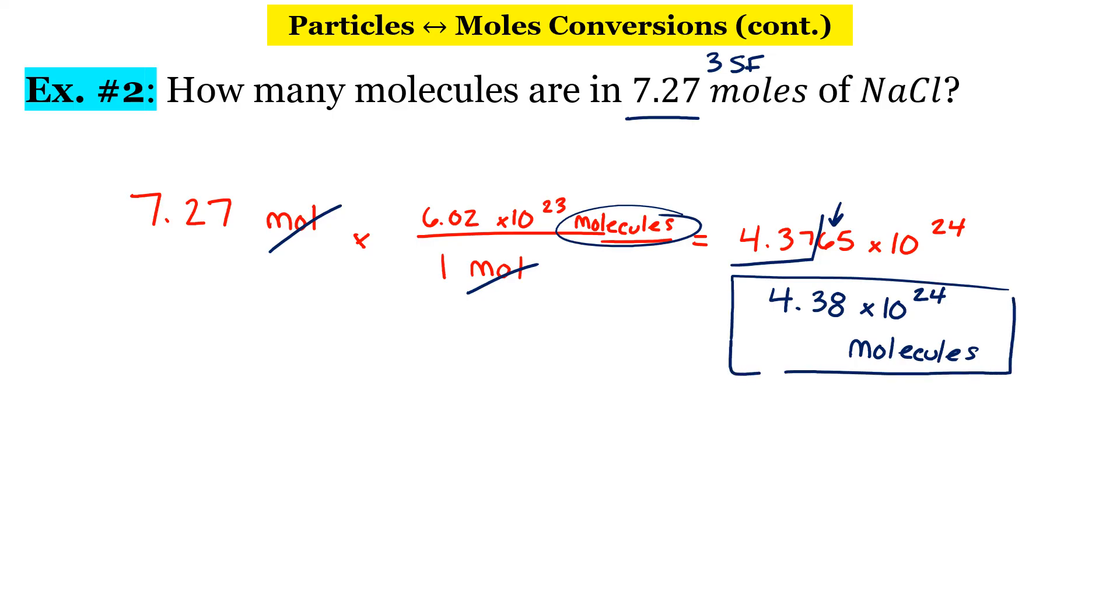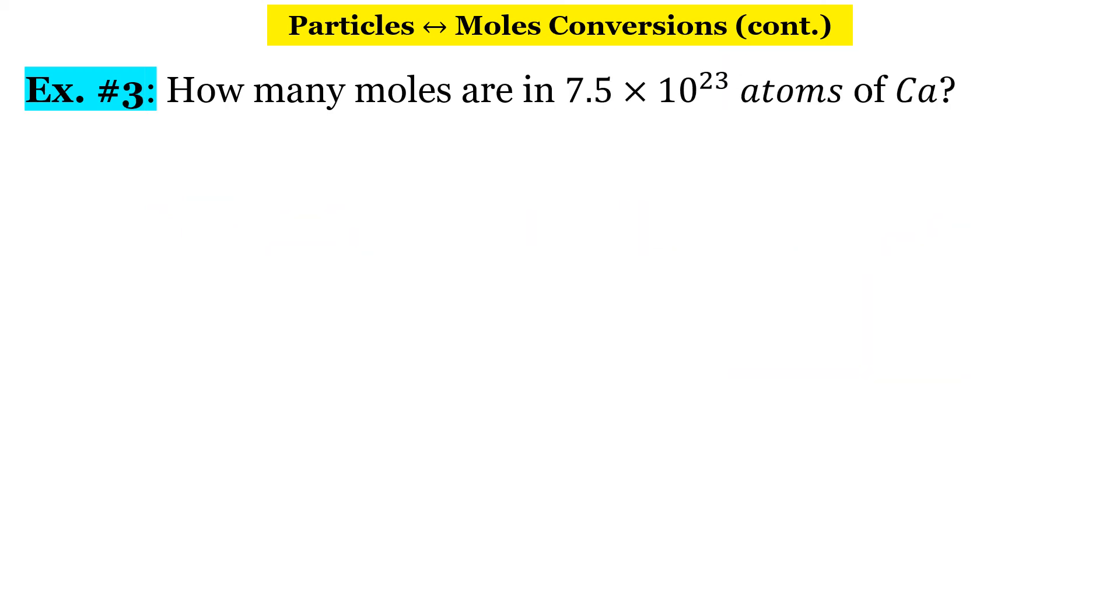Let's look at our final example. How many moles are in 7.5 times 10 to the 23rd atoms of calcium? So this one is different because we're starting with atoms and we want to convert to moles. Let's go ahead and write this out. Always start with your given, 7.5 times 10 to the 23rd atoms. So our conversion factor is going to be a little different this time. It's actually just going to be flipped. So the atoms go on the bottom. Avogadro's number will go on the bottom, 6.02 times 10 to the 23rd atoms in one mole.